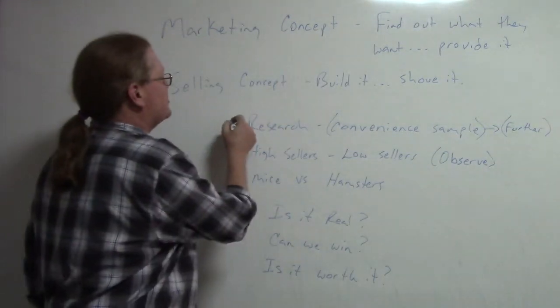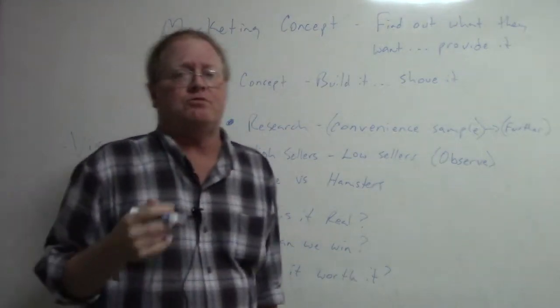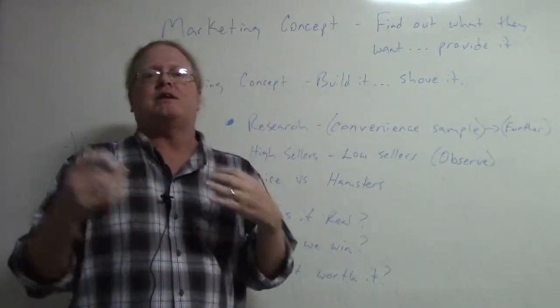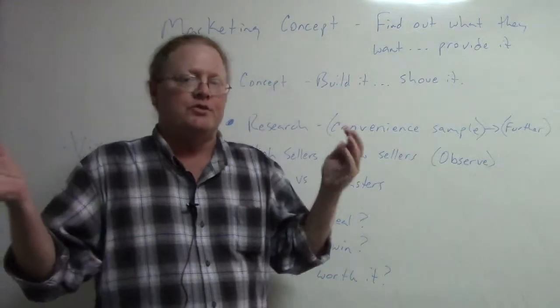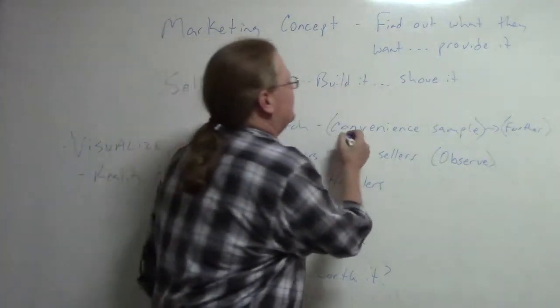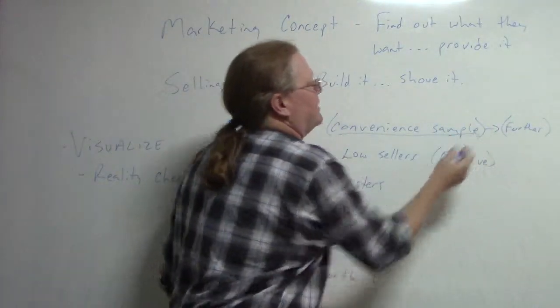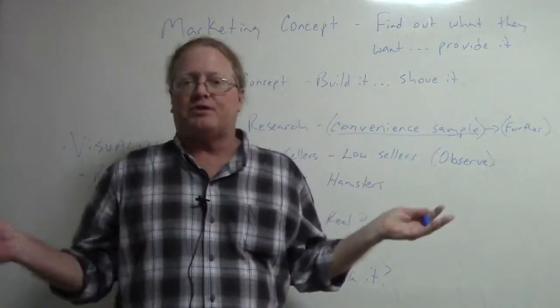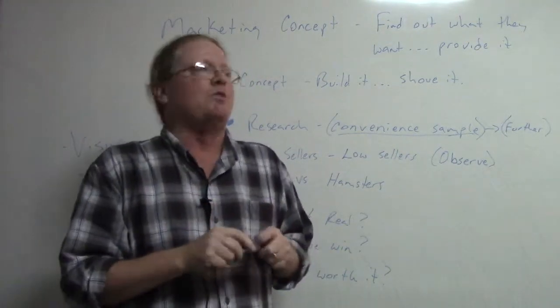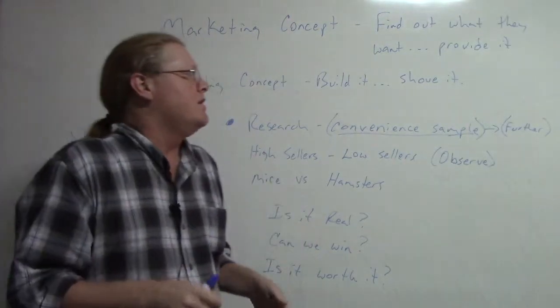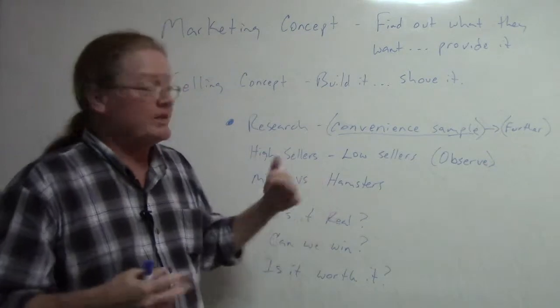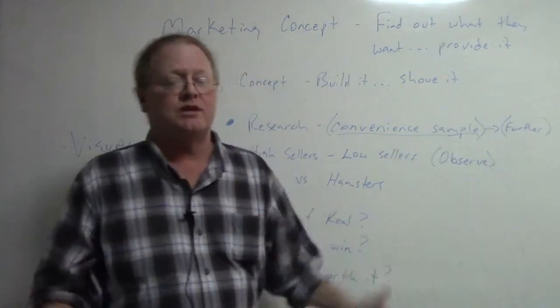So we really need to do some research. You need to bounce your ideas off of anybody and see if anybody can poke a hole into your thinking. We could do a convenience sample. That was a term from your study guide. Convenience sample is we just find our friends and our family and ask them what they think of our idea. Sometimes we get honesty, sometimes we don't.